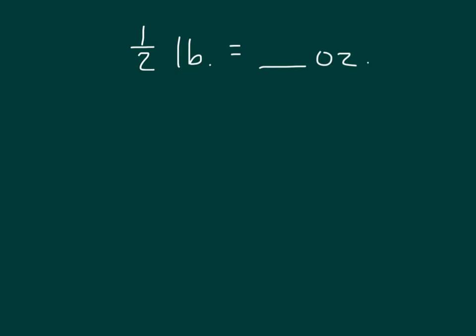So we're looking at a fraction of a larger unit. We're looking at one half of a pound. We know that one pound equals how many ounces? It's 16 ounces. Let's rename this pound within our original equation as 16 ounces. So I have one half times 16 ounces equaling blank ounces.